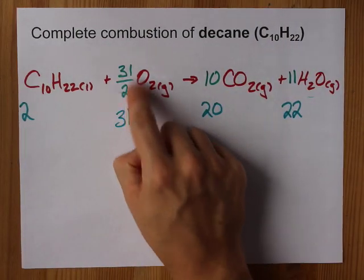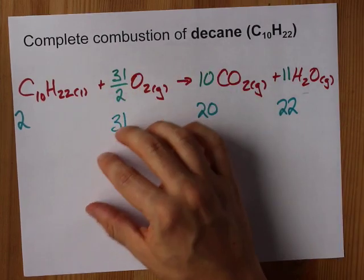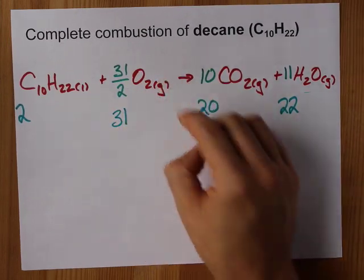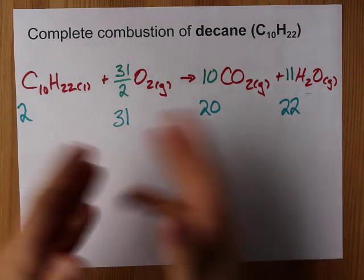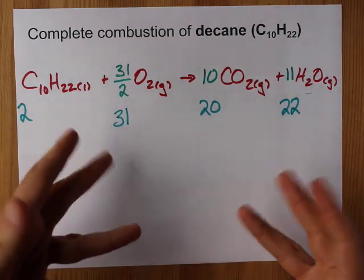But if you are, it's 1, 31 over 2, which is what? 15.5, 10, and 11. Doesn't matter to me which one you use. They're both technically balanced.